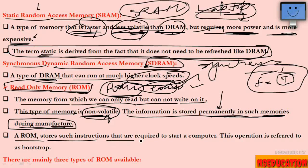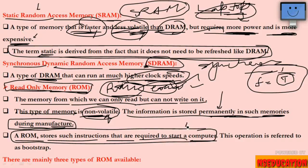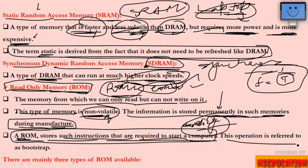When you switch on your system, it takes some time — 'Starting Windows' appears, information about the OS and processor is shown. This whole process is called booting. ROM stores the instructions needed for booting. This operation is referred to as bootstrap. There are three types of ROM. First is Masked ROM (MROM) — the earliest type of ROM. These are hardwired devices that contain a pre-programmed set of data or instructions. They are inexpensive.